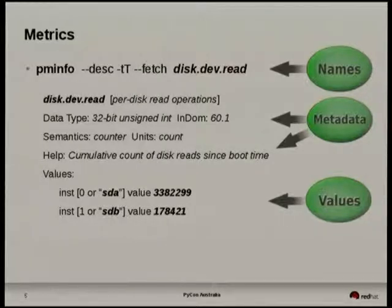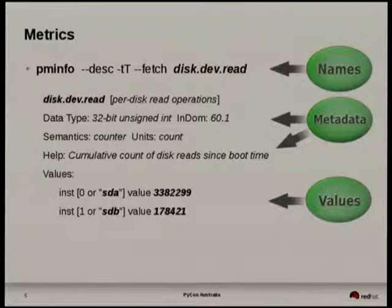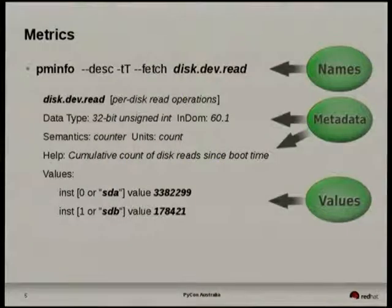You often want to compare a counter to the previous sample and see how it's changed within the sample interval. For instantaneous metrics, the value is interesting to you right away — it might be something like the number of users logged in or the amount of memory currently being used. The third kind of semantics is a discrete metric, similar to instantaneous but further classified in that we don't ever expect it to change — this might be the number of CPUs in the system or number of disks.